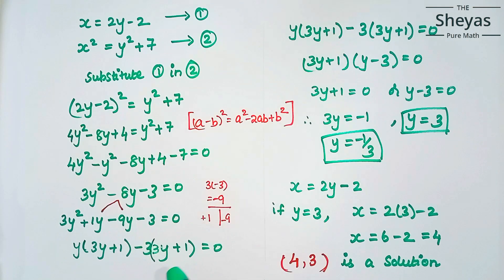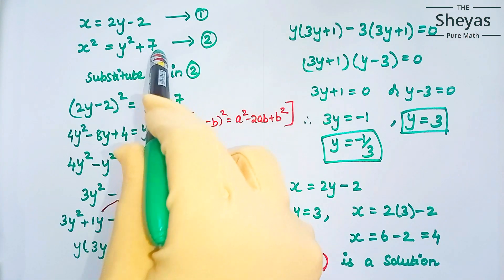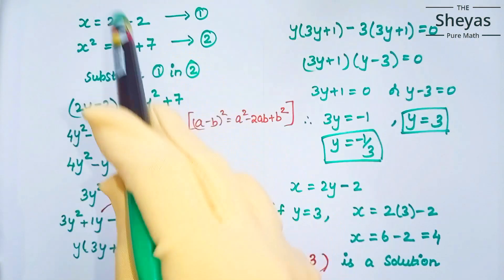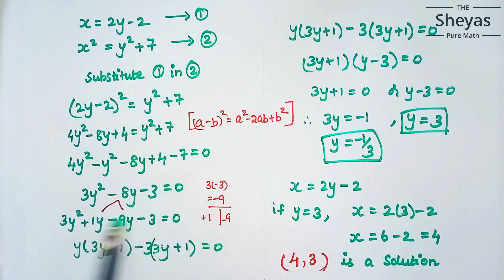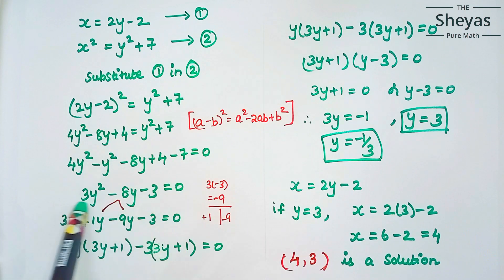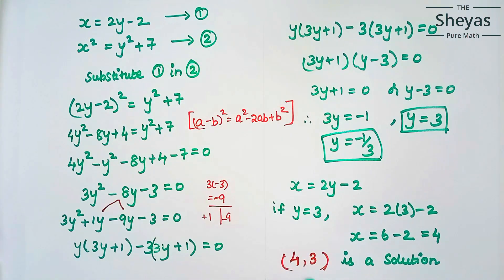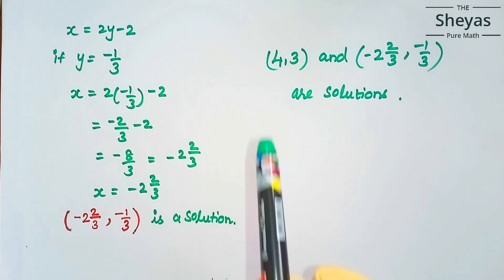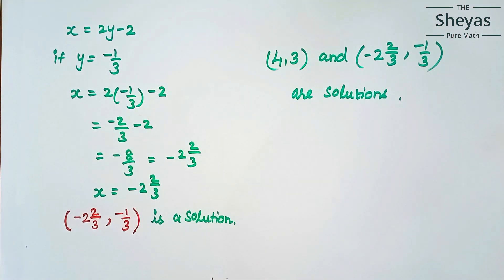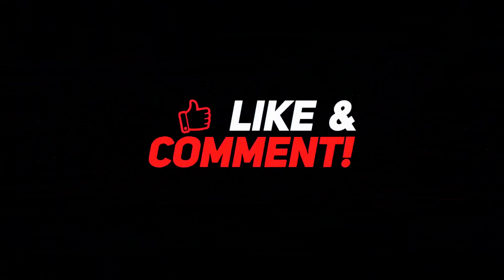To recap: we had a linear equation and a quadratic equation. We substituted equation 1 into equation 2 to get a quadratic equation in terms of y. Factorizing gave two y values. Substituting back into equation 1 gave two x values, hence two solutions. Thank you for watching — please like, comment, and subscribe to our channel.